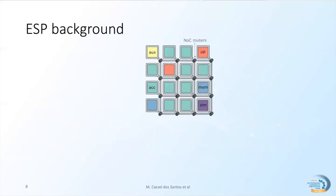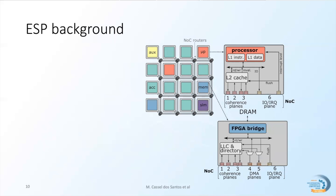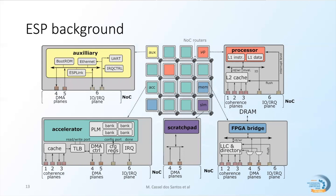The ESP architecture has a tile-based organization. For example, this is an instance of an architecture with 16 tiles. Heterogeneous tiles are connected to a multi-plane network-on-chip. All tiles have a modular socket that interfaces the encapsulated IP to the NoC. There are five types of tiles: the processor tile provides level 2 cache; the memory tile provides last-level cache and external memory interface; the accelerator tile provides DMA control and interrupt service; the shared local memory provides additional on-chip memory; and the auxiliary tile provides Ethernet and other external interfaces for host PC communication, system interaction control, and boot.